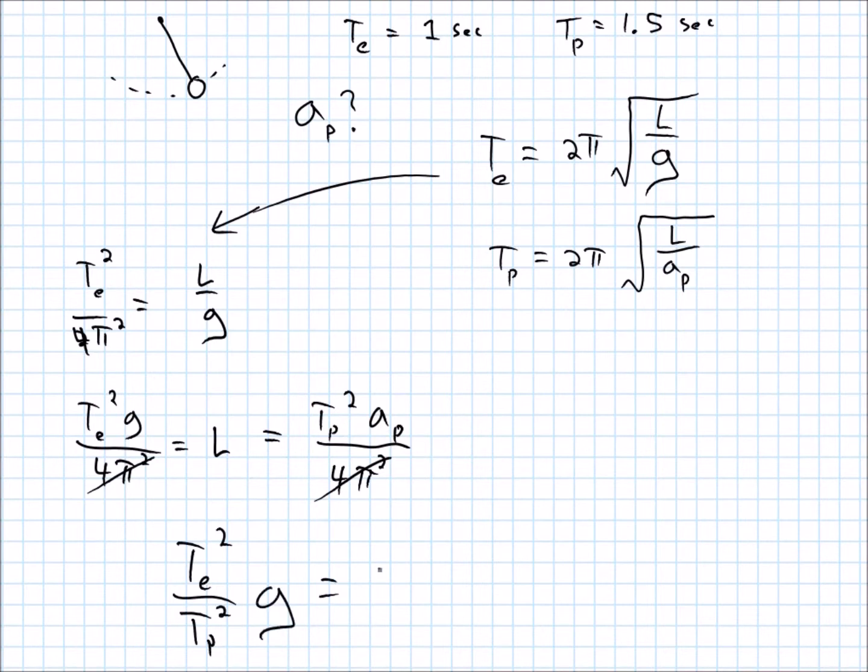That the acceleration due to gravity on this planet is this ratio times the gravity on Earth. So, let's see, that's 1 squared over 1.5 squared times 9.8.